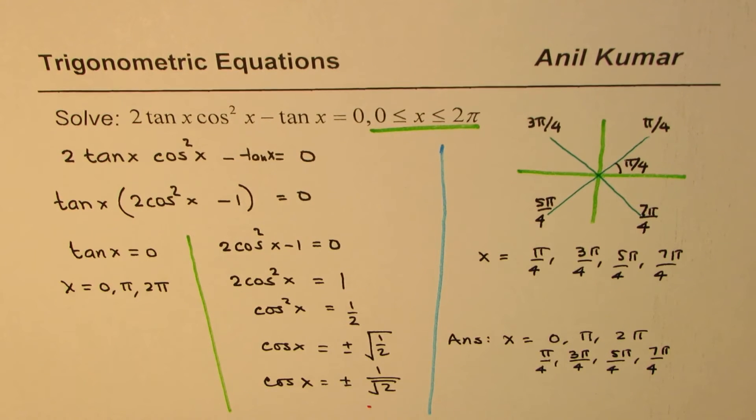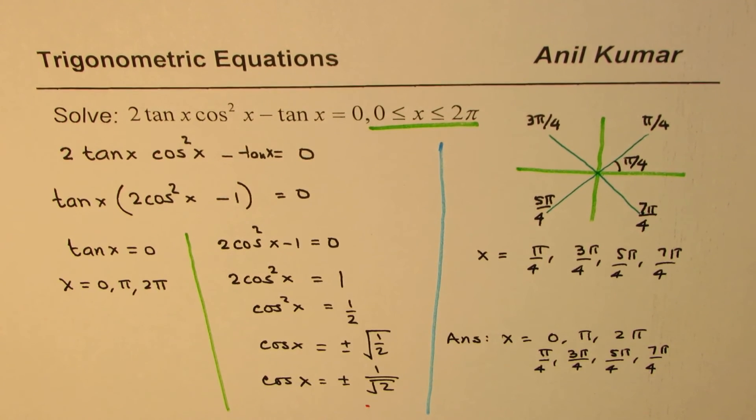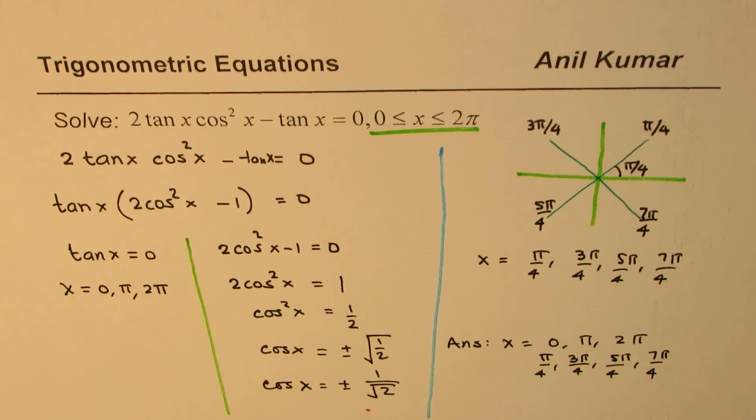As you can see here, we could have a number of solutions for a trigonometric equation, but we need to list all possible solutions in the given domain. That is very important to understand. I hope that helps. I'm Anil Kumar. You can always share and subscribe to my videos. Feel free to post questions. Thank you and all the best.